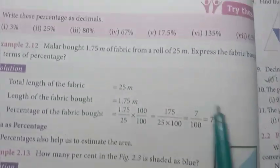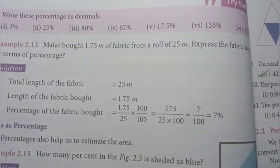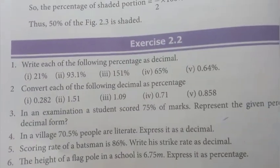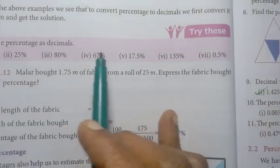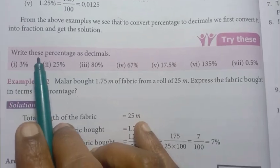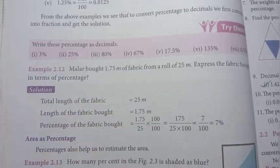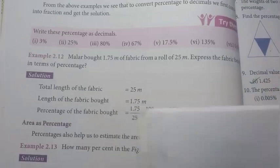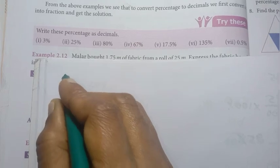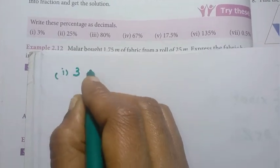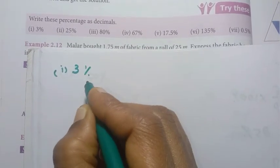Try these sums. So last, page 33. Try these — percentages as decimals. So on that try these sums pack. First one is 3%. You can add the percentage.